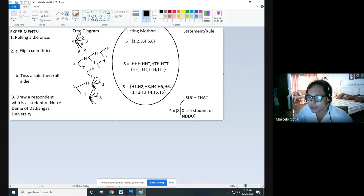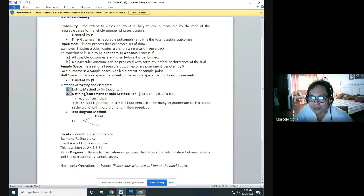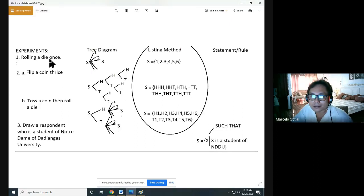Statement or rule, let's go back with our handouts. It says here this method is practical to use if all outcomes are too many to enumerate, such as cities in the world with more than one million. In this experiment, it's not applicable to use statement or rule because we can enumerate them all. Again, statement or rule is only applicable when there are too many.